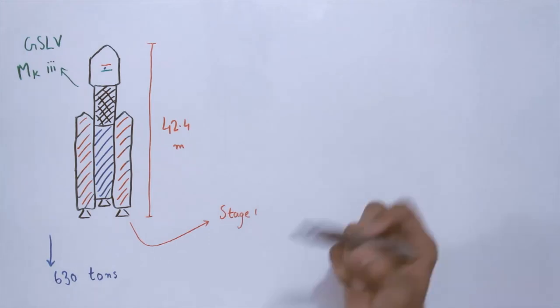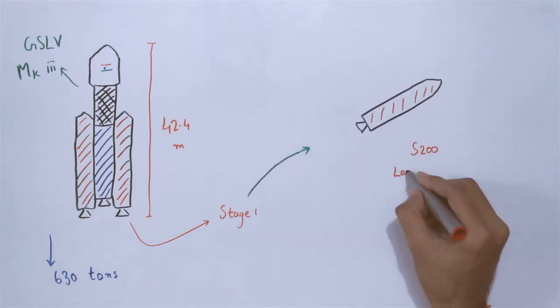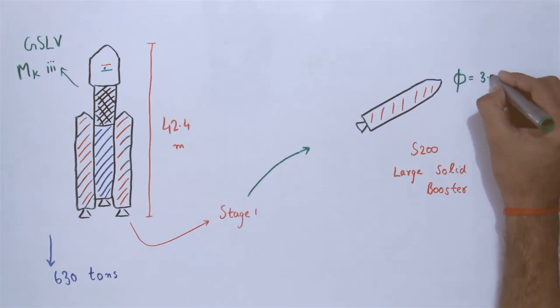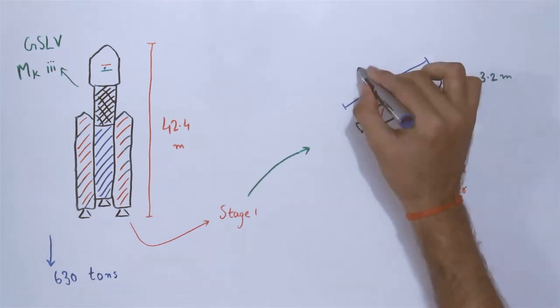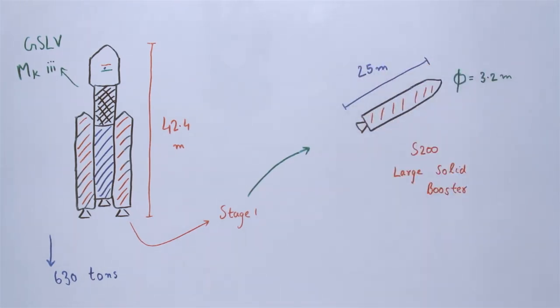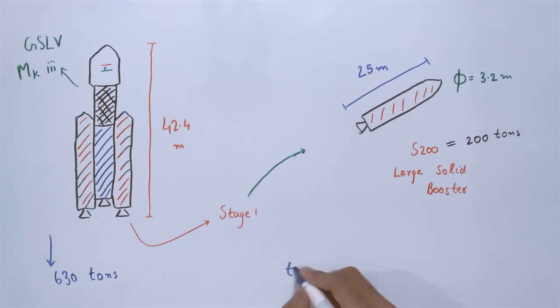Stage 1. The first stage comprises two identical S200 large solid boosters. Each booster has a diameter of 3.2 meters, a length of 25 meters and contains 200 tons of propellant. These boosters burn for 130 seconds and produce a peak thrust of about 10.3 million newtons.